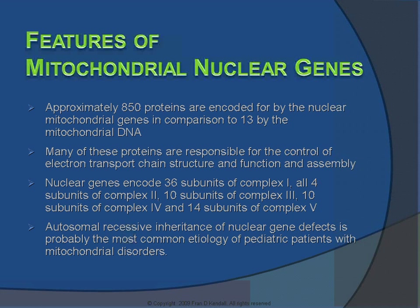Nuclear gene defects are inherited in an autosomal recessive fashion, which simply means that each parent is a carrier for an alteration in his or her genetic makeup that is passed on to their children with a 1 in 4 chance for each and every pregnancy. Data suggests this is the most common mode of inheritance for pediatric patients with mitochondrial disorders, with some studies indicating 75 to 90% of pediatric mitochondrial disease is inherited in this fashion.